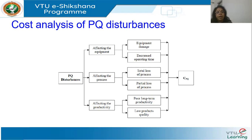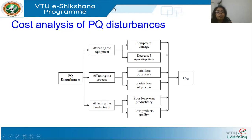With the process, either you have a partial loss or a total shutdown. For productivity, you can have long-term poor productivity or low product quality. For example, with silicon wafers, even a slight deviation in voltage quality results in poor wafer quality. You will end up with very poor quality products or a long-term productivity issue. All these have to be taken into account when calculating the cost of power quality disturbances.